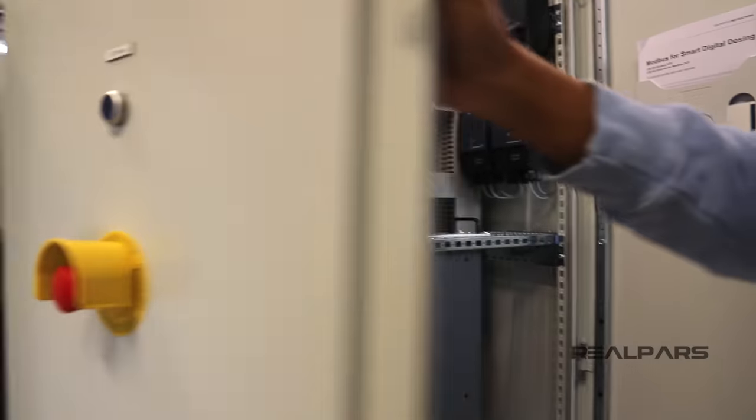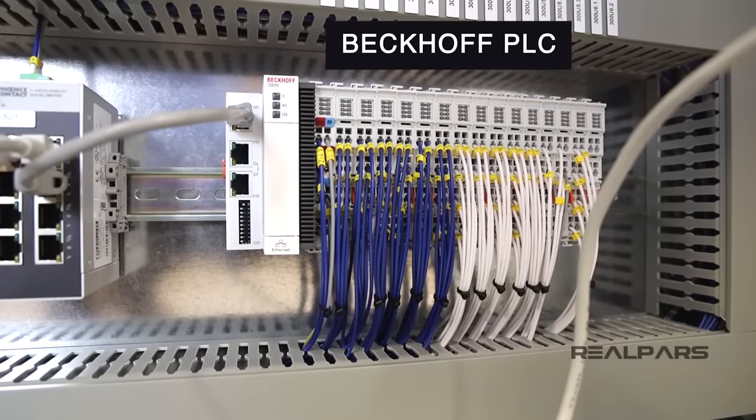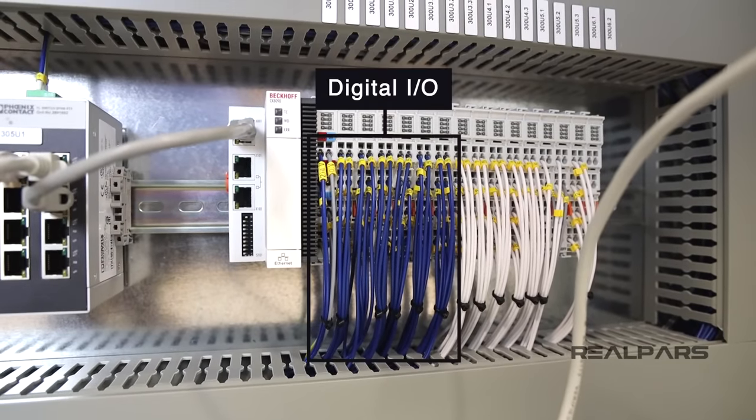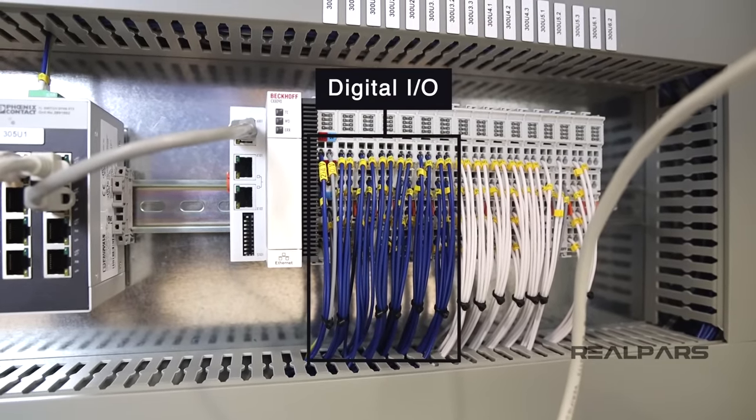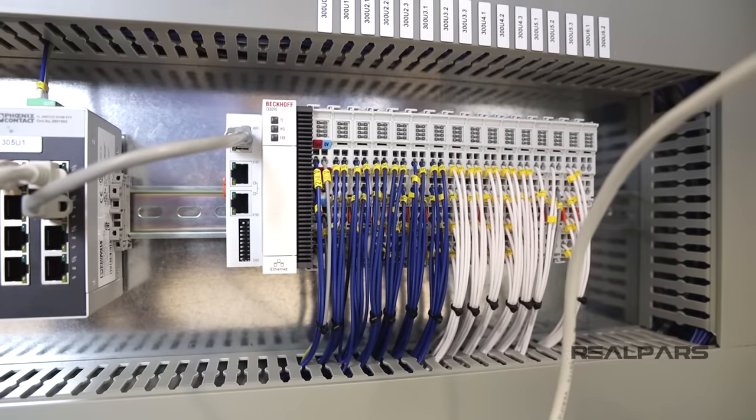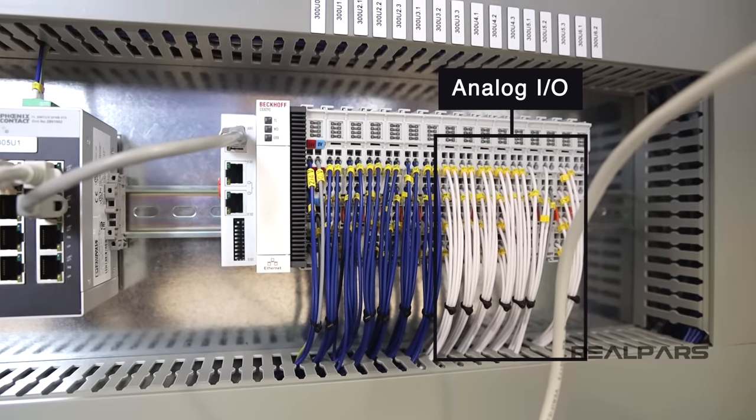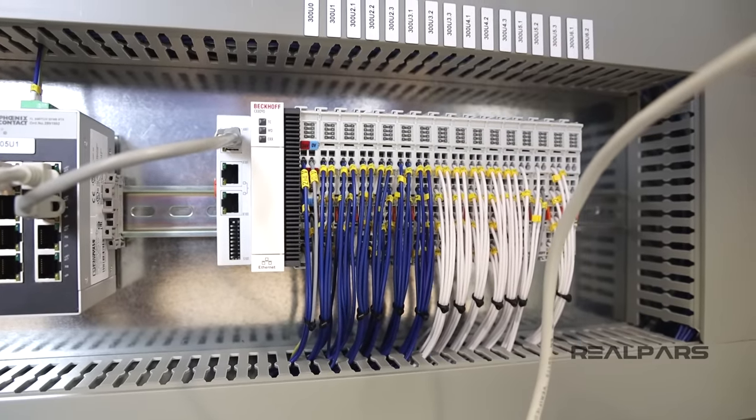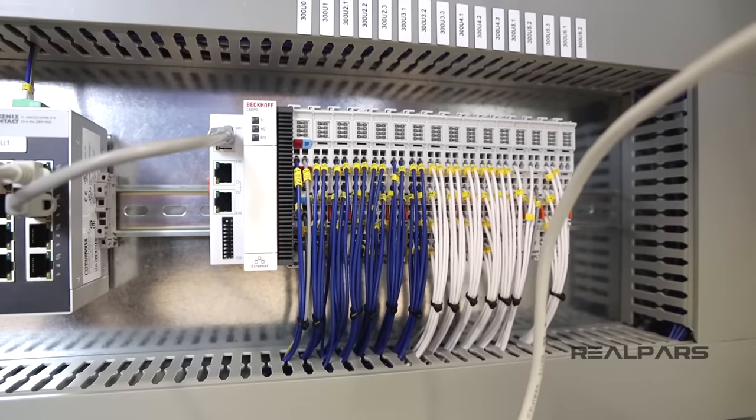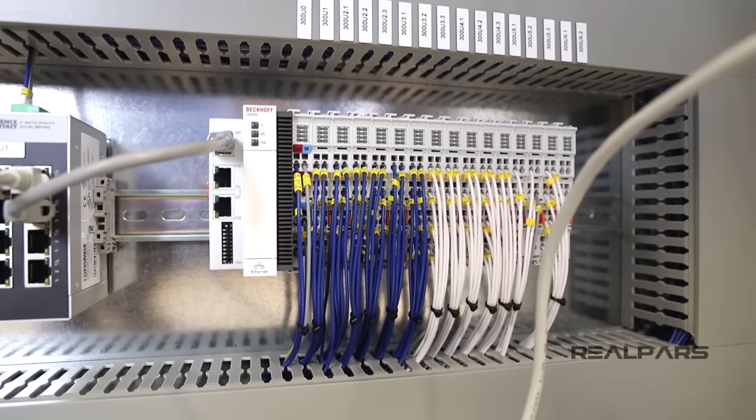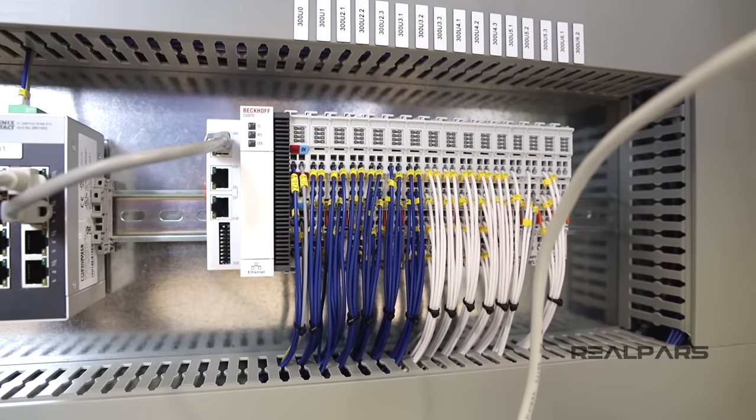On the back of the door, you see that the switch is wired all the way to the PLC input. This is a Beckhoff PLC. The blue wires that you see here are digital input and output signals, the white wires are analog inputs and output signals. These wires come all the way from the sensors and actuators in the field and get connected to the PLC.